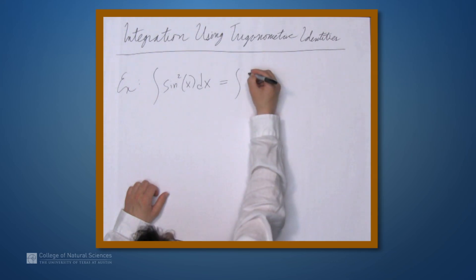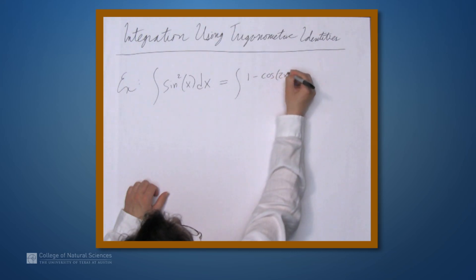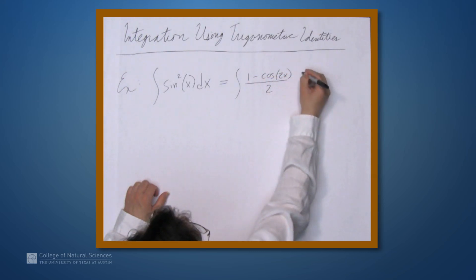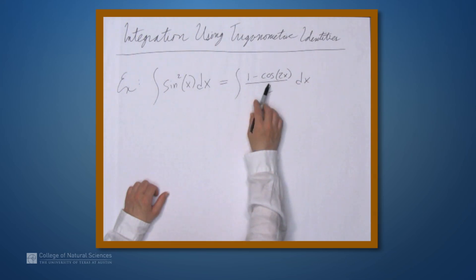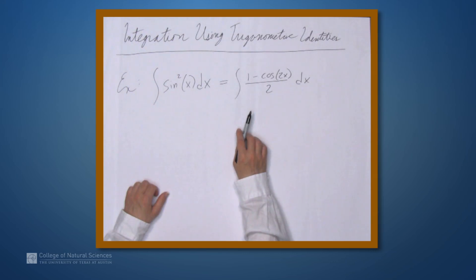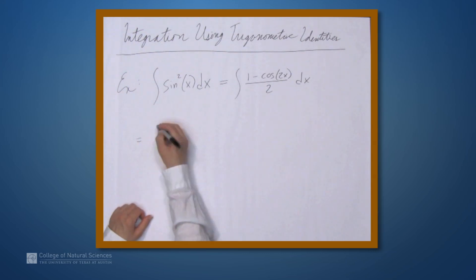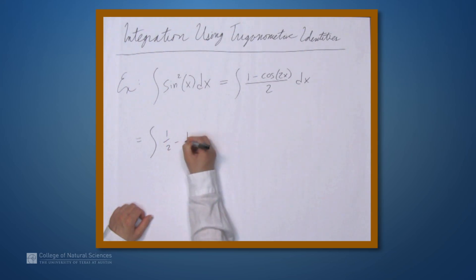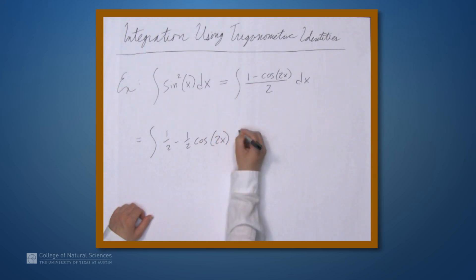That identity is sin²x = (1 - cos2x) / 2. So if we rewrite this, the integral becomes the integral of (1 - cos2x) / 2 dx.